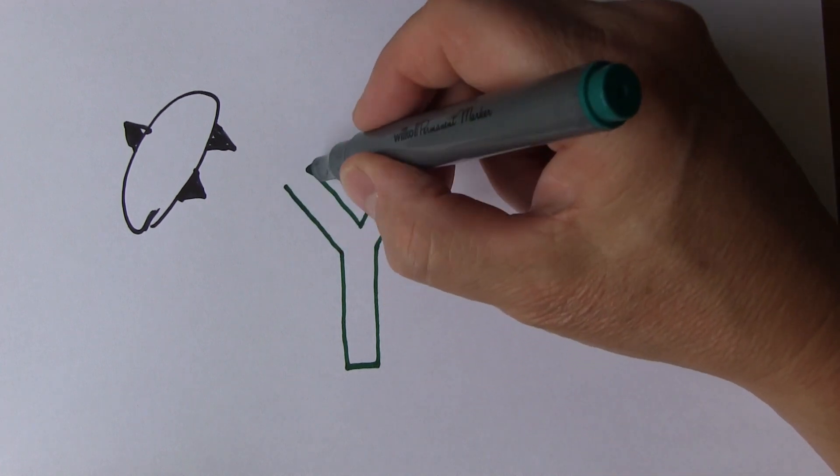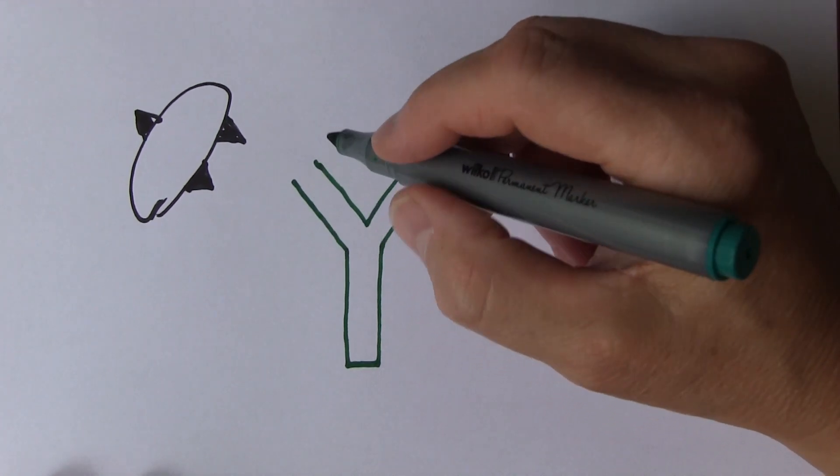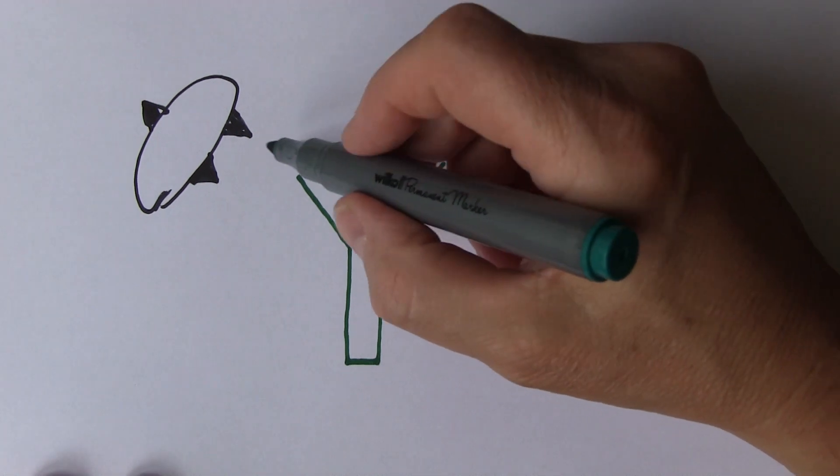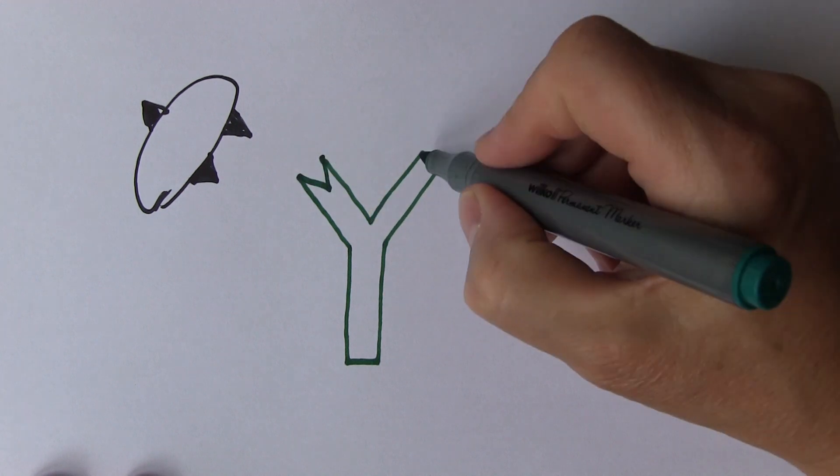And the part at the end is multivariable. And the clever part is that this part at the end will be made by the lymphocytes to be the reciprocal shape of this epitope, this antigenic epitope. So it will be that shape like that.